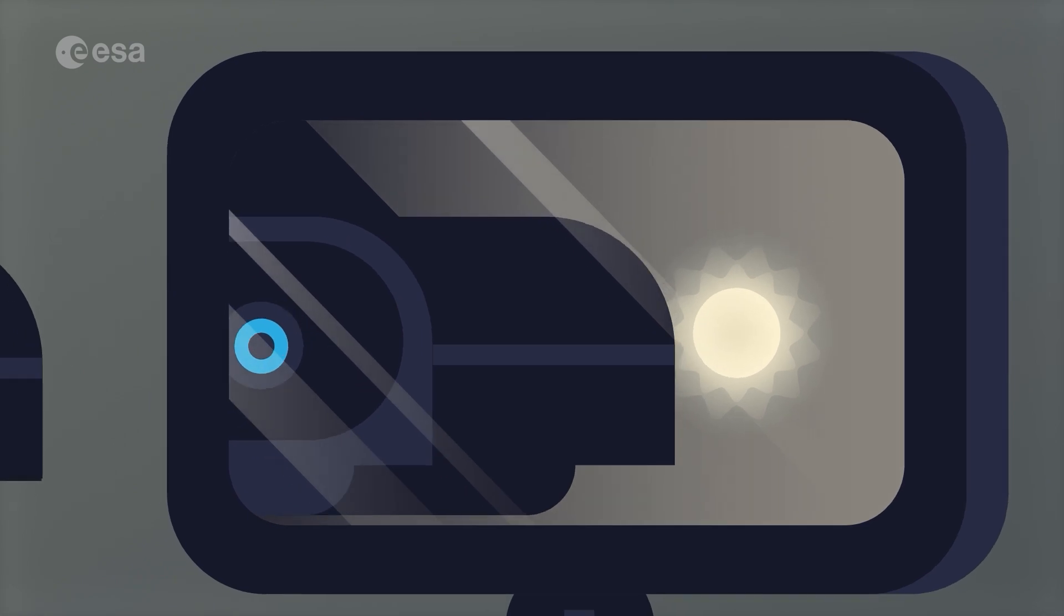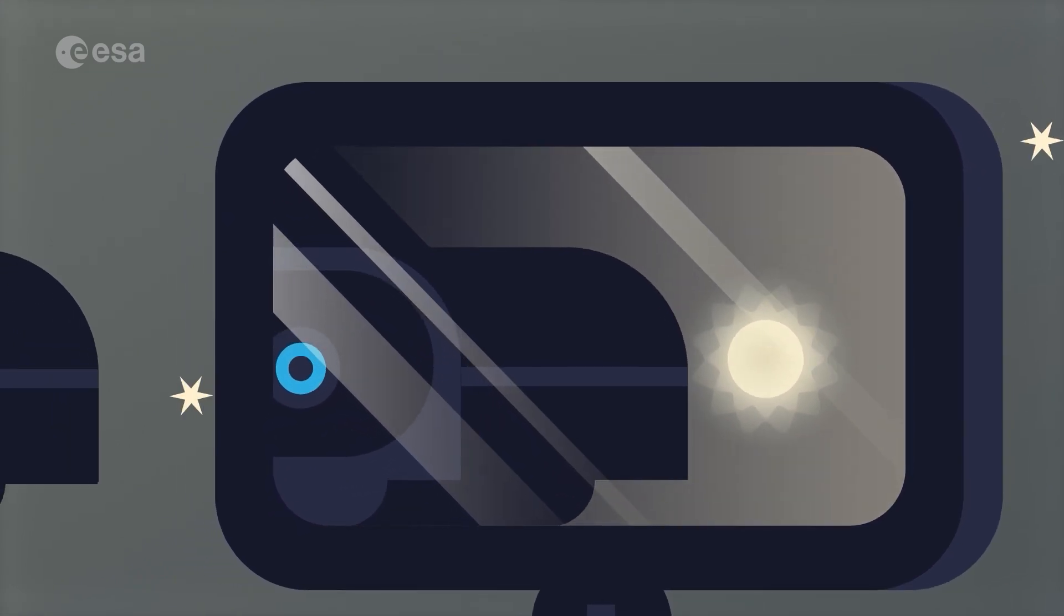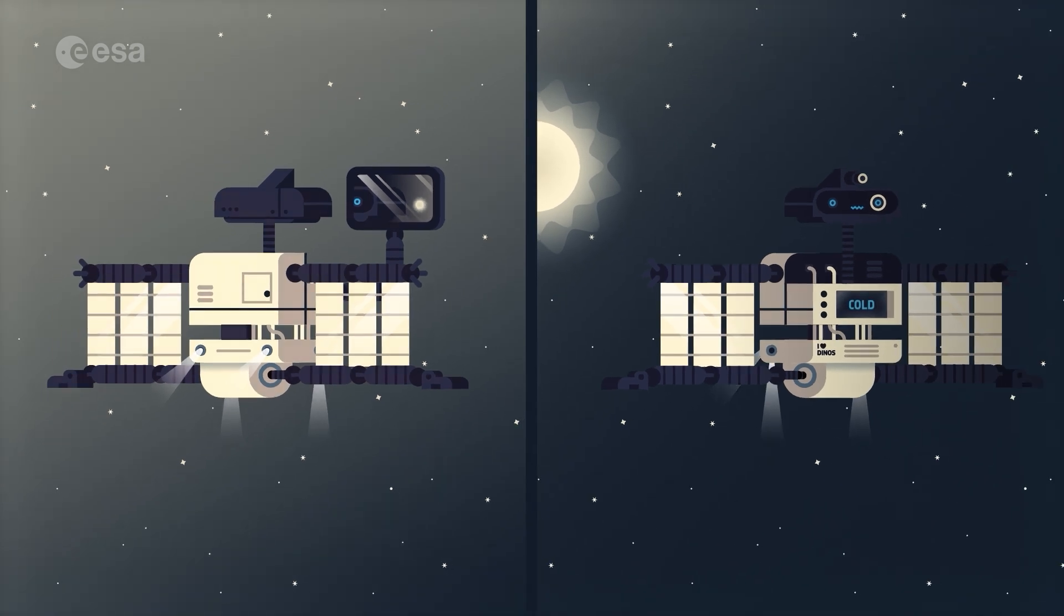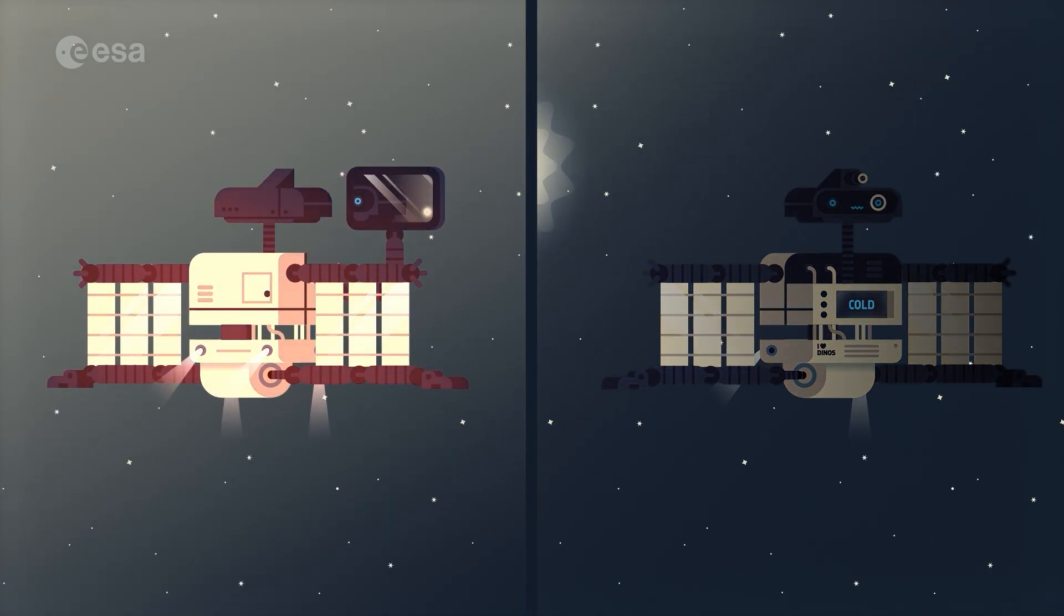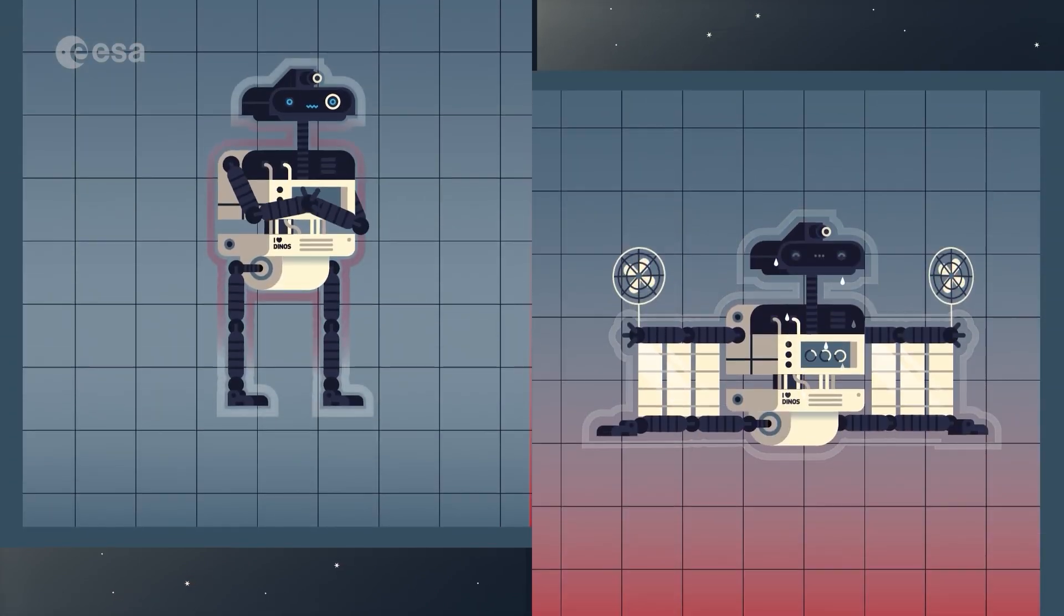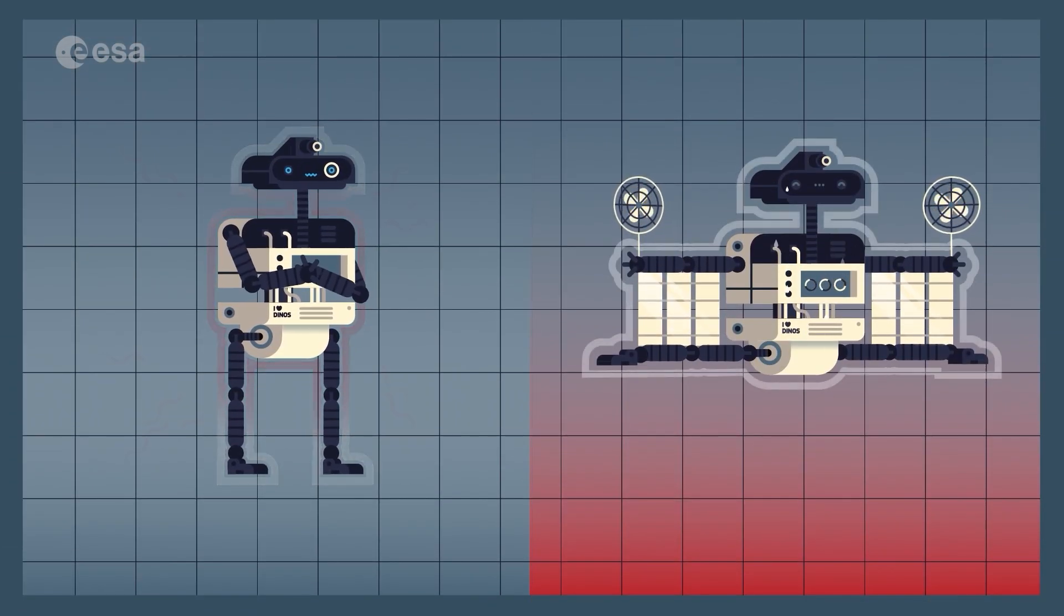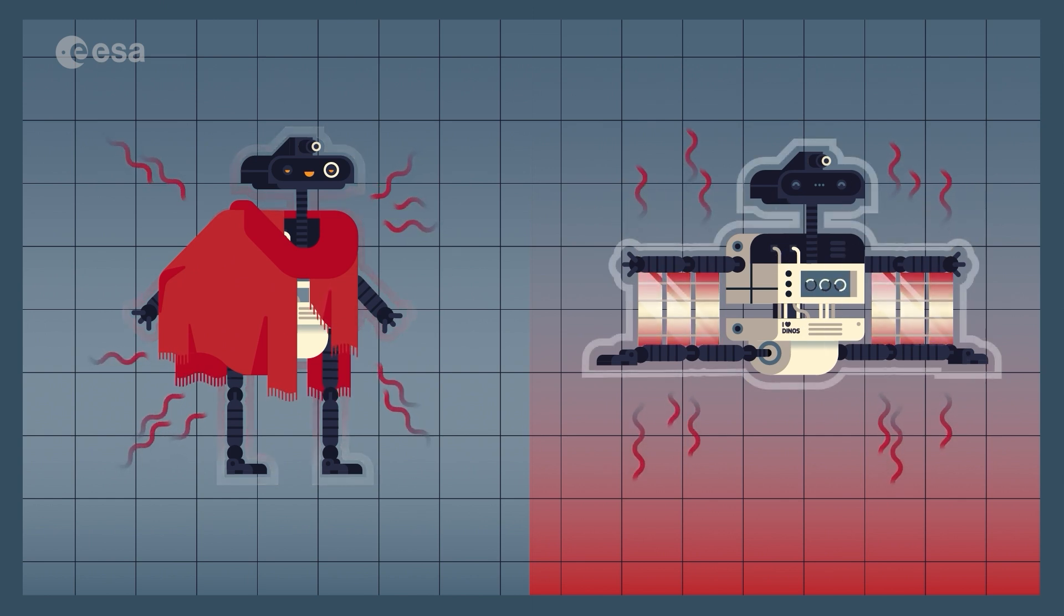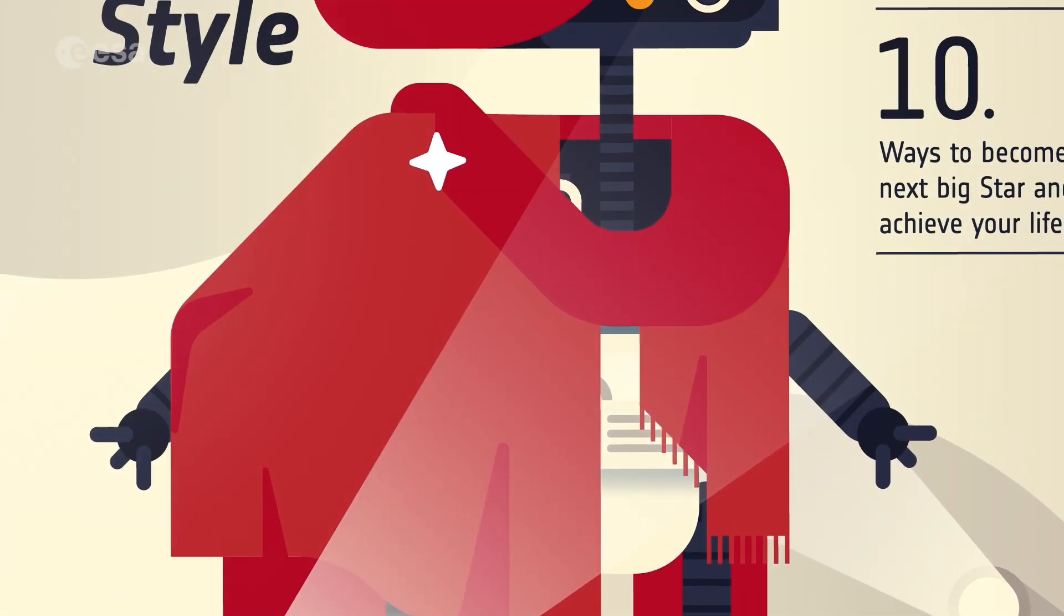Space is a realm of extremes. As HERA leaves the sun behind in her rearview mirror, one side of her can be extremely hot, while at the same time the other can be extremely cold. HERA needs to be room temperature for her electronics to work properly. She has glitzy multi-layer insulation blankets to keep the cold at bay and radiators to dissipate unwanted heat. HERA is functional and fashionable.